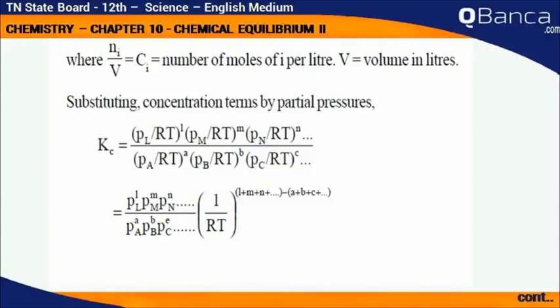Substituting concentration terms by partial pressures, Kc equals pL by RT to the power l times pM by RT to the power m times pN by RT to the power n etc. divided by pA by RT to the power a times pB by RT to the power b times pC by RT to the power c etc.